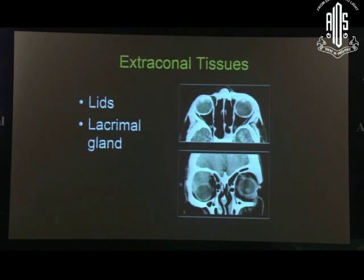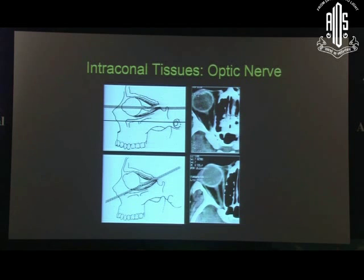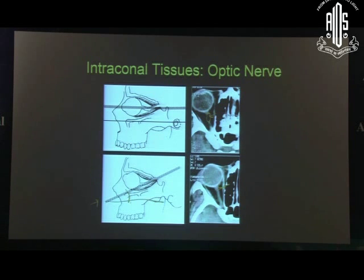Also look for involvement of the insertion of the extraocular muscle. In extraconal tissue, look at the lids — if they are thickened — or if the lacrimal gland is enlarged. In intraconal tissue, look at the optic nerve and the superior ophthalmic vein. If you want the entire optic nerve imaged, you must ask for it specifically because the optic nerve when the patient is supine is slightly curved. With the patient looking slightly up at a 35–40 degree angulation to the Reid's line, you get the entire optic nerve in one image.